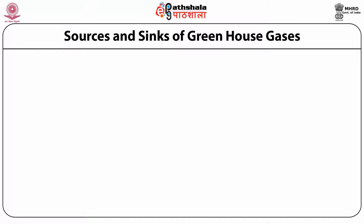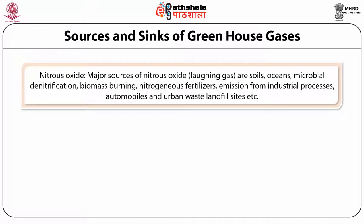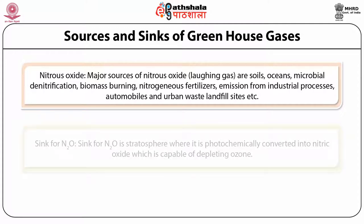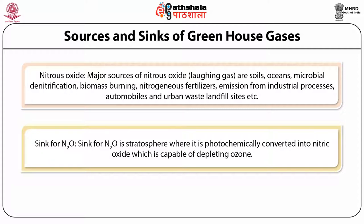Another greenhouse gas is nitrous oxide. Major sources of nitrous oxide are soils, oceans, microbial denitrification, biomass burning, nitrogenous fertilizers, emission from industrial processes, automobiles and urban waste landfill sites. The sink for nitrous oxide is the stratosphere, where it is photochemically converted into nitric oxide, which is capable of depleting ozone.